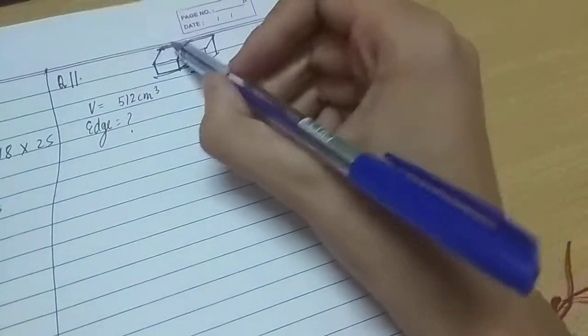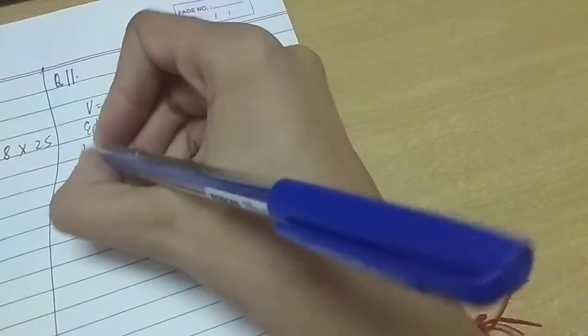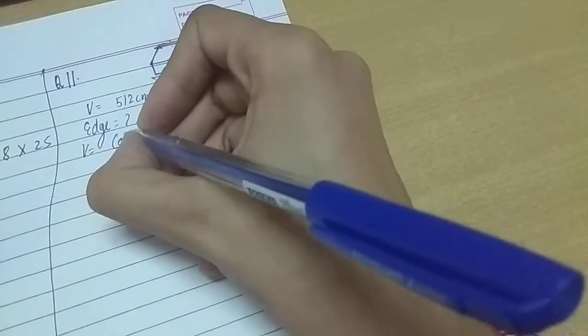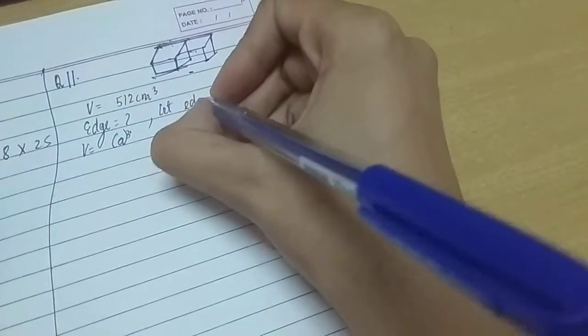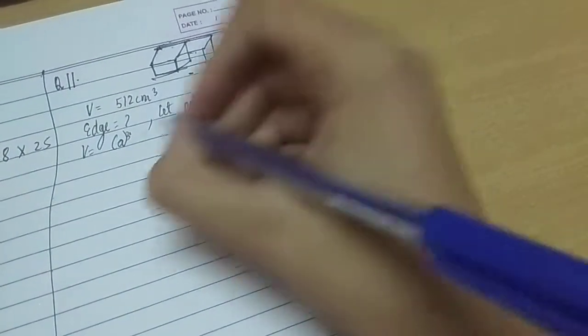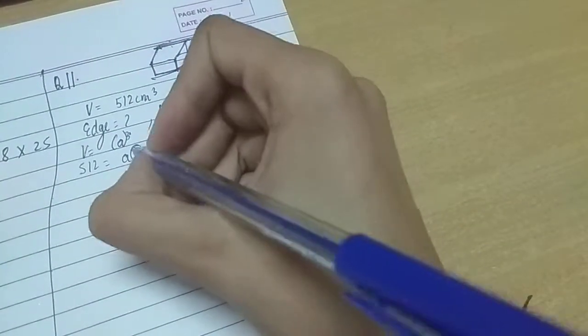So it means we can find the edge. If we find the edge, then we would be able to derive the length, breadth, and height for the new cuboid. So we need to find edge. Now volume is equal to a³. Let the edge be a.